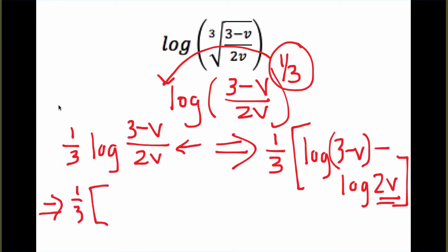So what we would get, we'll keep the 1/3rd in front. We're not going to change the first expression. And then this subtraction sign has to be distributed to this entire log of 2v. So we'll say minus log of 2 plus log of v.